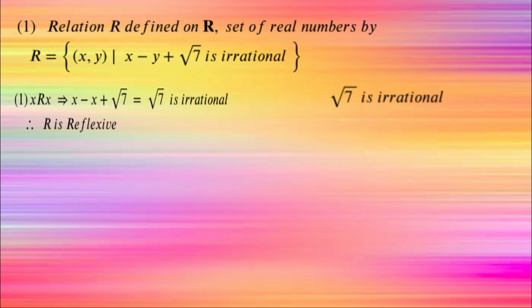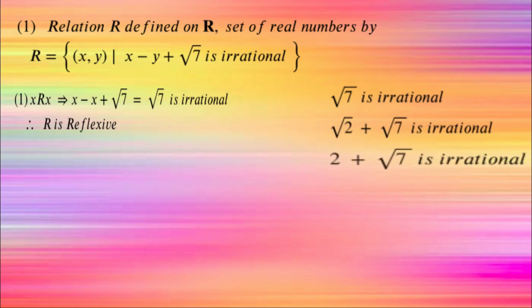We know √7 is irrational. The sum of two irrational numbers is irrational. For example, √7 plus √7 is 2√7, which is irrational again.